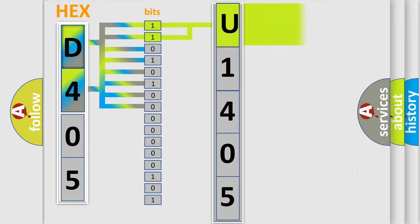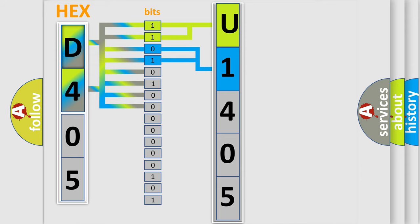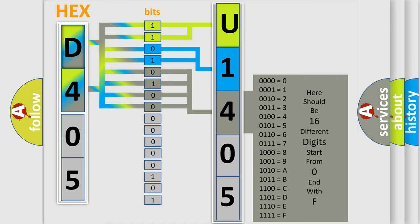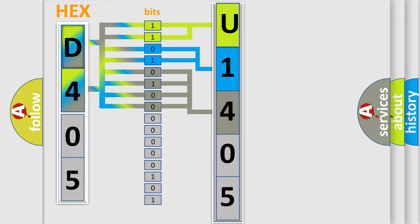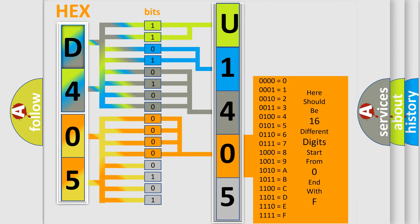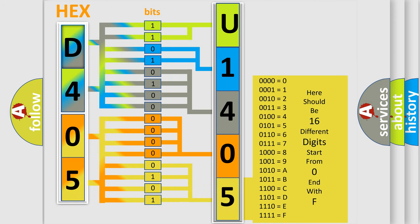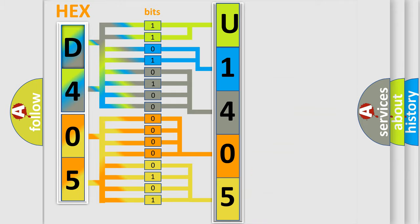By combining the first two bits, the basic character of the error code is expressed. The next two bits determine the second character. The last four bits of the first byte define the third character of the code. The second byte is composed of eight bits: the first four bits determine the fourth character, and the last four bits define the fifth character. A single byte conceals 256 possible combinations. We now know how the diagnostic tool translates the received information into a more comprehensible format.